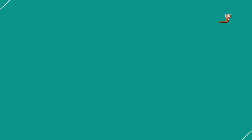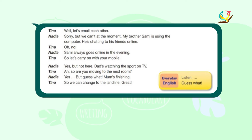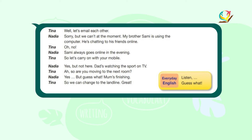Now let's move to the second part of the conversation. Tina: Well, let's email each other. Nadia: Sorry, but we can't at the moment. My brother Sammy is using the computer — he's chatting to his friends online. Tina: Oh no. Nadia: Sammy always goes online in the evening. Tina: So let's carry on with your mobile. Nadia: Yes, but not here — Dad's watching the sport on TV. Tina: So are you moving to the next room? Nadia: Yes, but guess what — Mom's finishing. Tina: So we can change to the landline. Great.